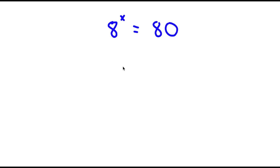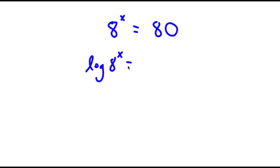In this problem, I have 8 to the power of x is equal to 80. To solve this, I'm going to first start by taking the log on both sides. So I have log 8 to the power of x is equal to log 80.